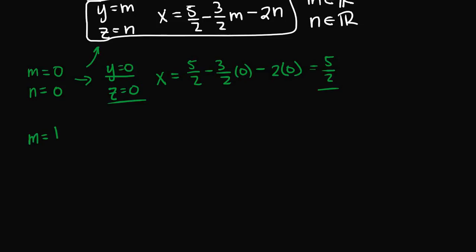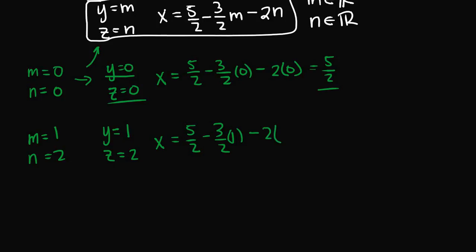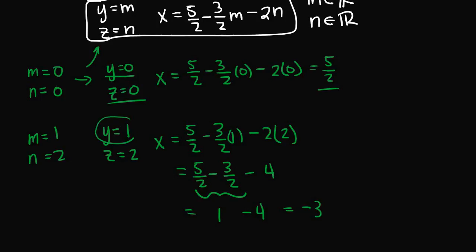Let's try another one: m equals 1 and n equals 2. Then y equals 1 and z equals 2. So x equals 5/2 minus 3/2 times 1 minus 2 times 2, which gives 5/2 minus 3/2 minus 4. That equals 1 minus 4, which is negative 3. So the particular solution is x equals negative 3, y equals 1, z equals 2. Since m and n can be any real numbers, this linear equation has an infinite number of particular solutions.